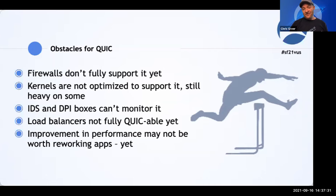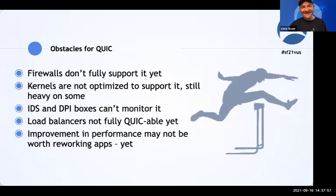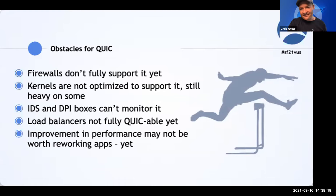Daryl has a great question: does QUIC have any features baked in that make it easier to troubleshoot and analyze versus TCP? It seems like it only makes it more complicated. Honestly, no — if anything, it's a lot harder to analyze than TCP. If TCP has been a struggle, QUIC can be a monster. But not impossible. A big thing about analyzing QUIC is that in order to make any headway into actually seeing the protocol, we have to be able to decrypt it. QUIC encrypts so much of its header and what it's actually doing.